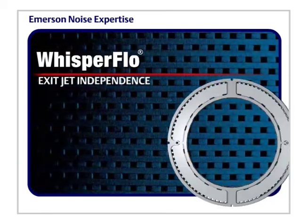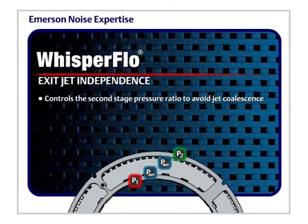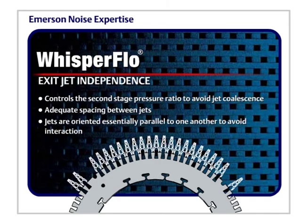Exit jet independence controls the second-stage pressure ratio to avoid jet coalescence, with adequate spacing between jets. Jets are oriented essentially parallel to one another to avoid interaction.